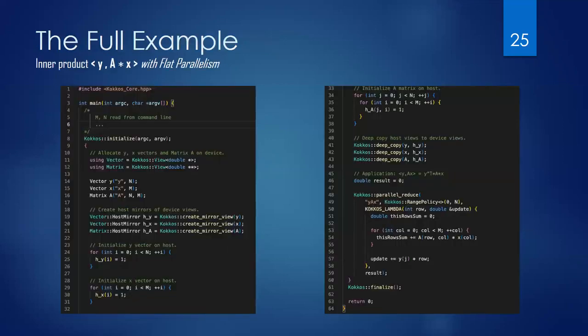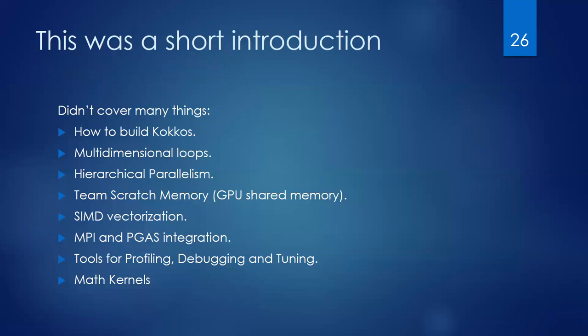This is the full example of what we've gone through. By changing how you compile your program, you can run on CPUs or GPUs. There are many things not covered here, such as how to build COCOS, multi-dimensional loops and hierarchical parallelism, using device-specific memories like GPU shared memory, SIMD vectorization, integration with MPI or PGAS, different profiling tools, and math kernels.